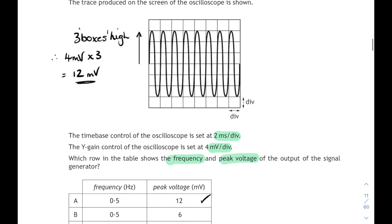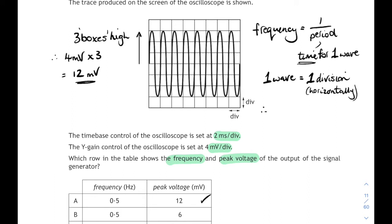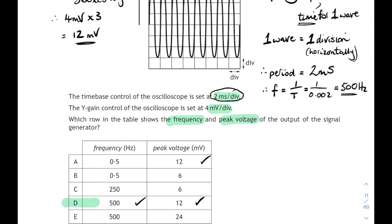Of course, we can work out the frequency as well. Remember from your national 5 relationships, the frequency is equal to 1 over the period of the wave. The period of the wave is the time for one wave. We can determine that from the diagram there. One wave takes up one division horizontally. If we look at our time-based control, we're told that each division horizontally is 2 milliseconds. So the period of the wave must be 2 milliseconds. The frequency is 1 over that. 1 over 0.002 is 500 hertz. 500 hertz corresponds to answer D.